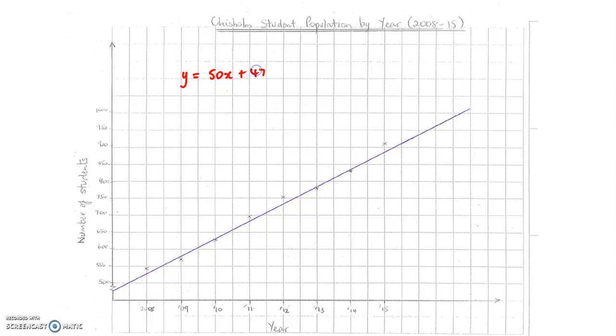Now remembering that we relate the X and Y axis. On the Y axis we actually have the student numbers. So we can say students will actually equal 50 times, now our X value is actually the year down here. So it will be 50 times the year plus this 475.